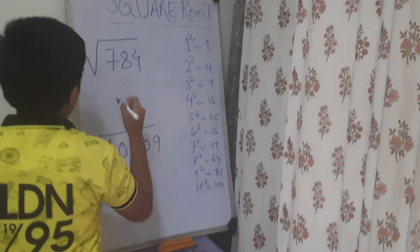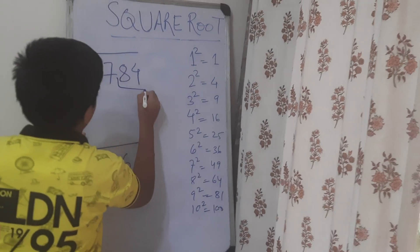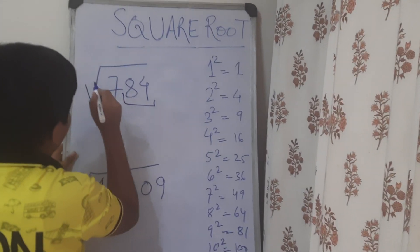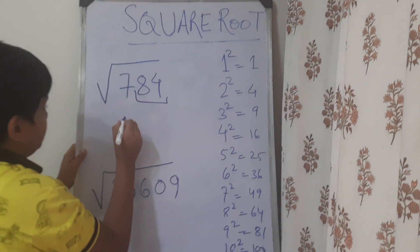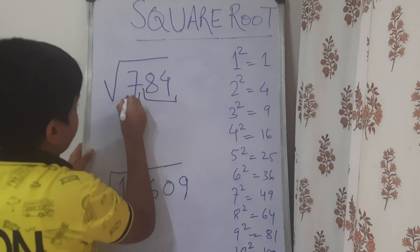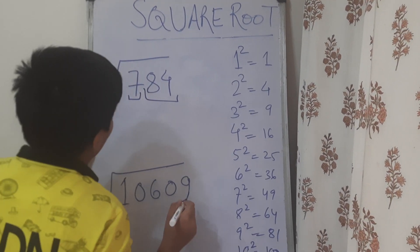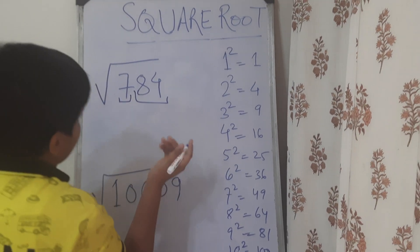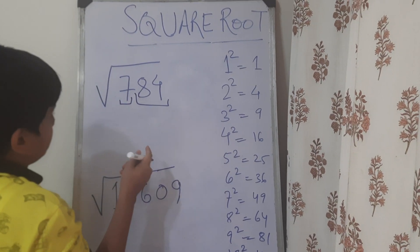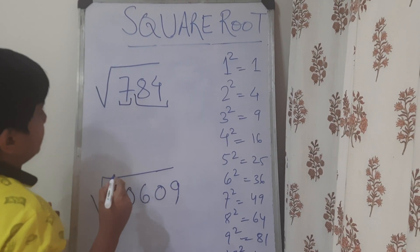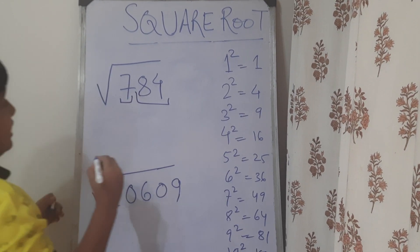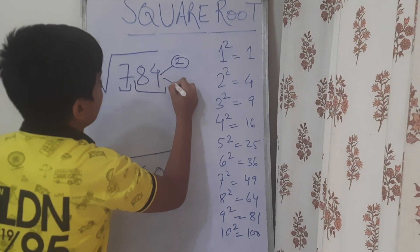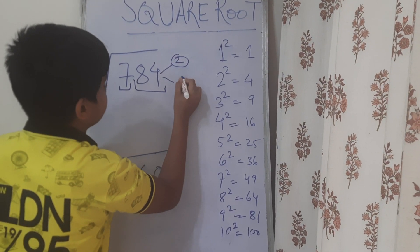First, we make a pair of the right digits. So, 84 is a pair. And we make the pair of the remaining digits. So, 7 is a pair. Now, we need to know that 4 is the ending digit of the square of its two numbers. So, 4 is the ending digit of the squares of 2 and 8.